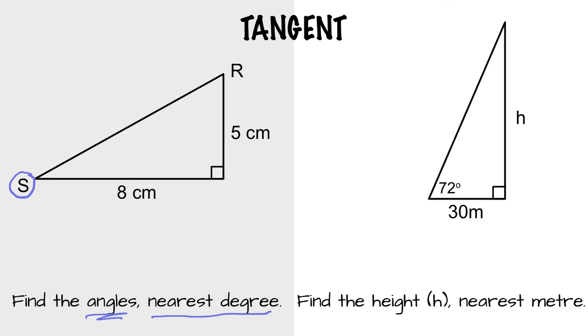So from S's perspective, tangent TOA, opposite over adjacent. That's going to equal 5 over 8. And that is going to turn out to be, to four decimals, 0.6250. That is the ratio.